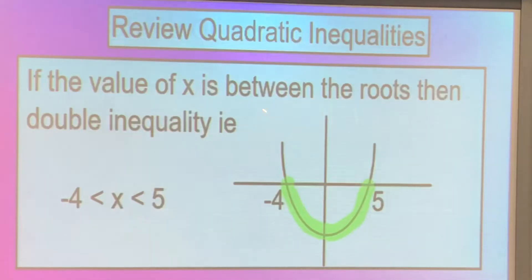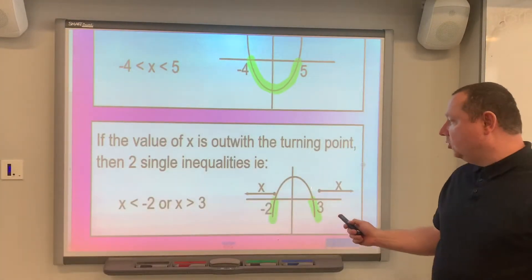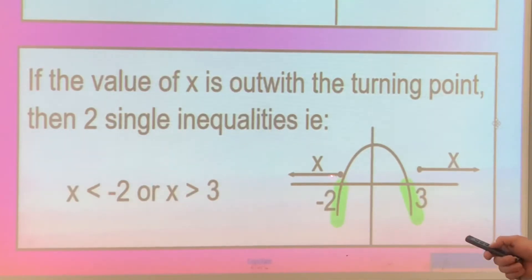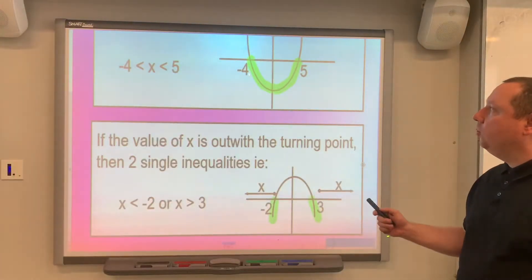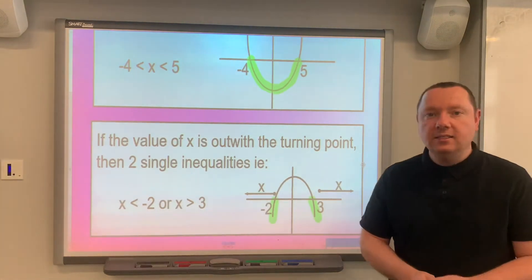Here's something to keep in mind. If the value of x is between the roots, then we get a double inequality. So if this is the bit below the x-axis, we'd say x is between minus 4 and 5, written as minus 4 is less than x which is less than 5. Similarly, if the solution is outside the roots, we would say x is less than minus 2, or x is greater than 3 — two single inequalities, one less than and one greater than.